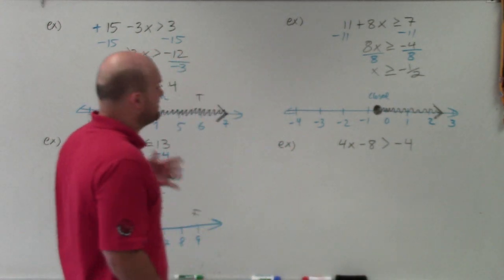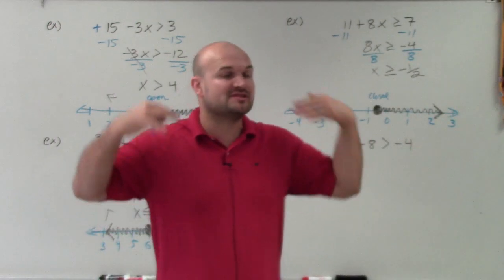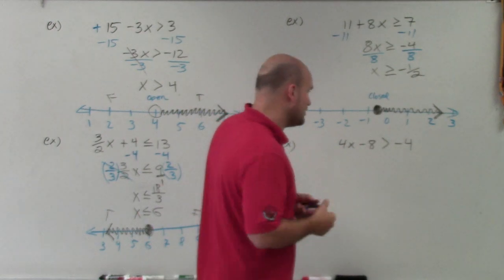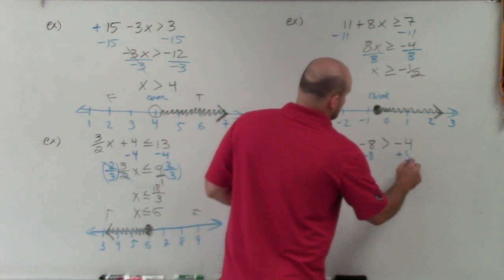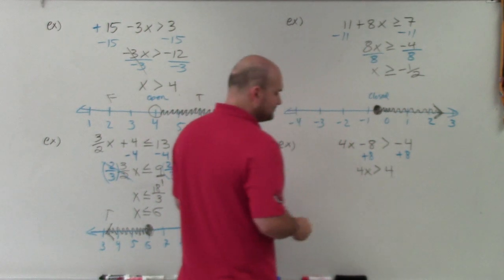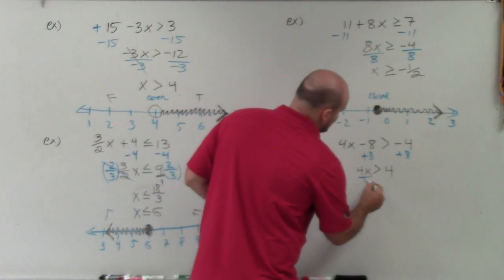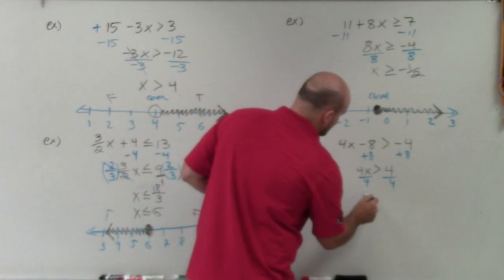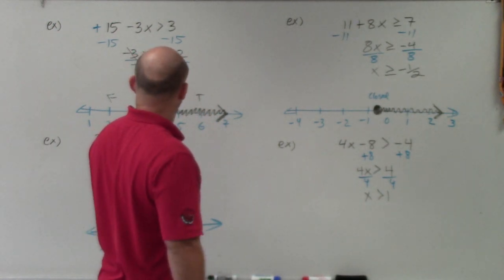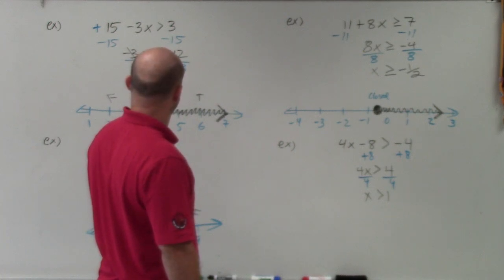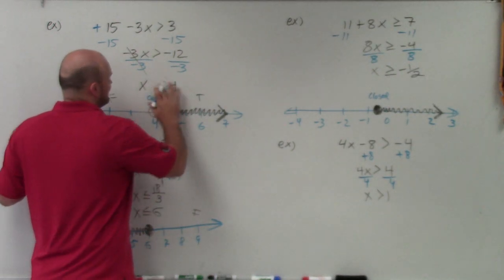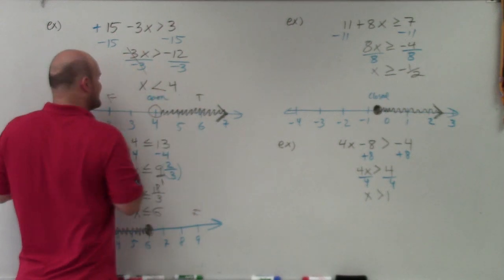All right, last example here. This one has a lot of negative signs, and a lot of students will automatically think you've got to flip the sign. But remember, it's only when you multiply or divide by a negative number — don't think about flipping the sign until you actually get to it. The first thing I can see is 4x minus 8. You can see that my variable is being subtracted by 8, so I'm going to add 8 on both sides. I'm left with 4x is greater than positive 4. Now my variable is being multiplied by 4, so I'm going to divide by 4. And I'm left with x is greater than 1. Wait — I forgot to flip my sign. I even said it and didn't do it. x is less than 4.